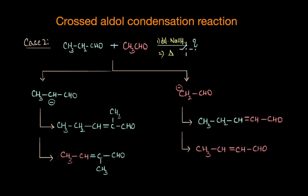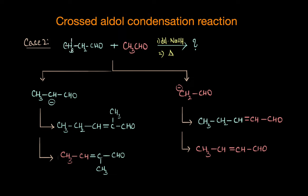Crossed aldol condensations can be effective if planned such that only one of the reactants can form an enolate ion — that is, only one of the reactants has an alpha hydrogen atom — and the other reactant, which is more likely to be attacked, is available in excess.